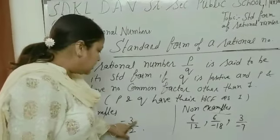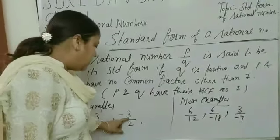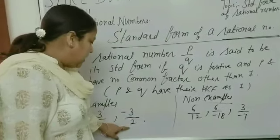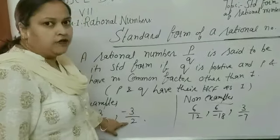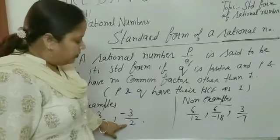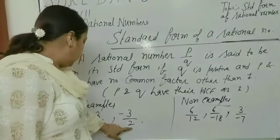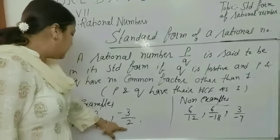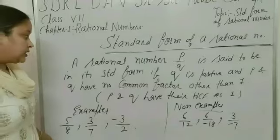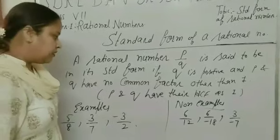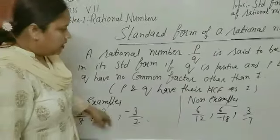Next is minus 3 upon 2. Here the denominator is 2, which is positive, and 3 and 2 have no common factor other than 1. Therefore, these three numbers are examples of Rational Numbers which are in Standard Form.